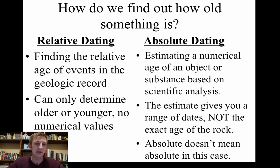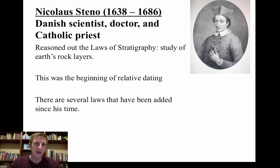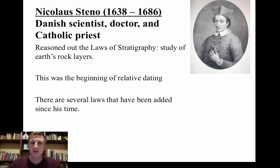Relative dating, which is the one where you figure out approximate age — older or younger — was actually kind of started by this guy named Nicholas Steno. His name was Nikolaus Stenson. He was a Danish scientist, doctor, and Catholic priest. We always refer to him as Steno — that's kind of the Latinized version of his name. He's the guy who reasoned out these things called the layers of stratigraphy, and stratigraphy is just the study of rock layers. This was the beginning of relative dating.